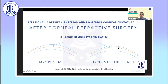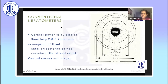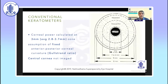Whether it is LASIK, SMILE, or PRK — any corneal refractive surgery — there is a change in the Gullstrand ratio. Most normal formulae assume a fixed ratio, and the posterior curvature power is compensated by changing the corneal refractive index in the formulae. So when this Gullstrand ratio is altered, you can have errors in biometry.